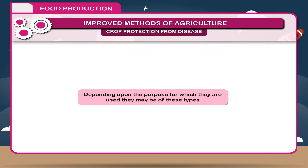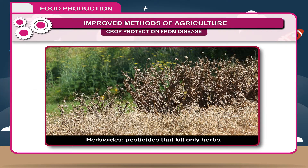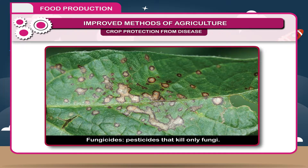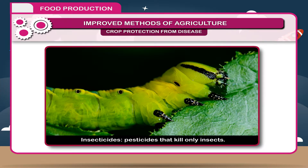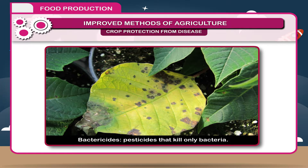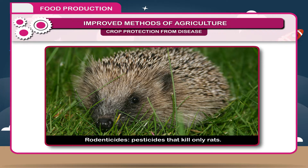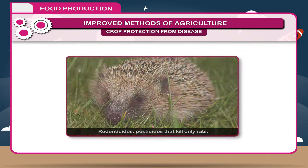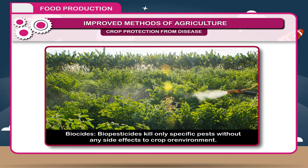Depending upon the purpose for which they are used, they may be of these types: 1. Herbicides — pesticides that kill only herbs. 2. Fungicides — pesticides that kill only fungi. 3. Insecticides — pesticides that kill only insects. 4. Bactericides — pesticides that kill only bacteria. 5. Rodenticides — pesticides that kill only rats. 6. Bio-pesticides — kill only specific pests without any side effects to crop or environment.